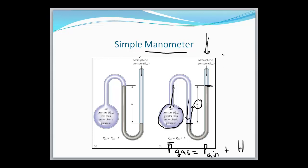So if atmospheric pressure were 760 millimeters of mercury, and you would need to know that, you would add that column, or that height of that column, to your 760 to get the pressure of the gas.